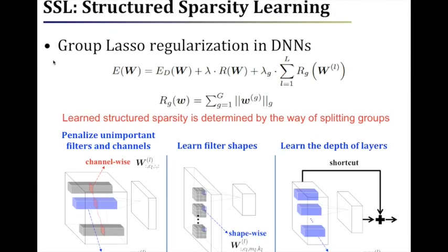We propose to use Group Lasso to learn structured sparsity. We explored four types of structured sparsity as shown in this figure. Our method can learn the number of filters, channels, and neurons. And it can also learn the shape of filters and the depth of layers.